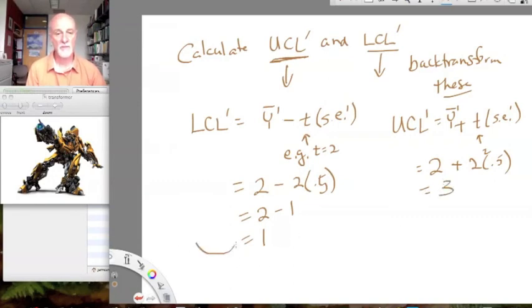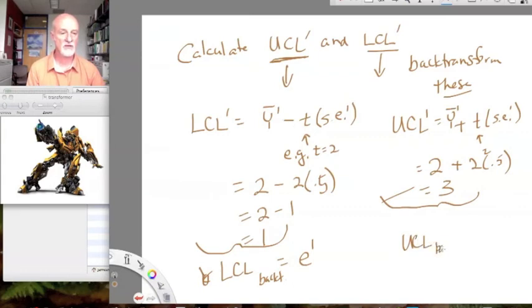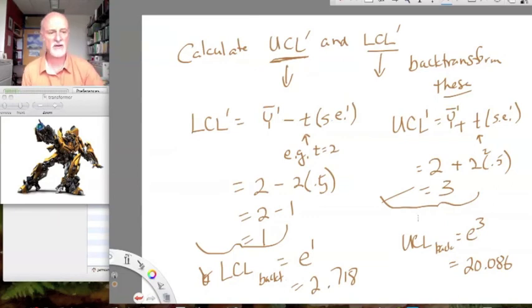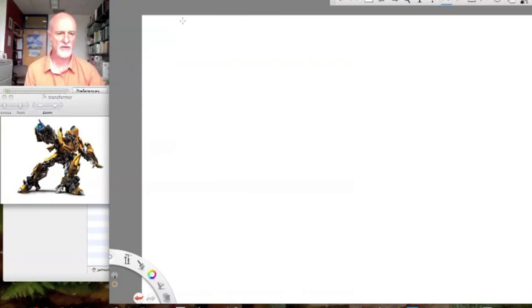Now, I can back transform these. How do I do that? I then apply my formula. The lower confidence limit back transformed equals E to the 1. And the upper confidence limit back transformed equals E to the 3rd. And so, E to the 3rd is 20.086. E to the 1 is 2.718. And now we have asymmetrical confidence intervals around our graph, which is what we should have.